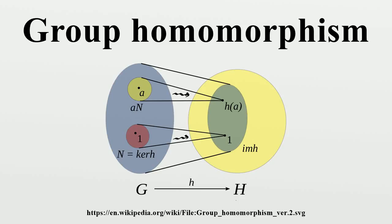...where the group operation on the left-hand side of the equation is that of G and on the right-hand side that of H. From this property, one can deduce that h maps the identity element e_G of G to the identity element e_H of H.